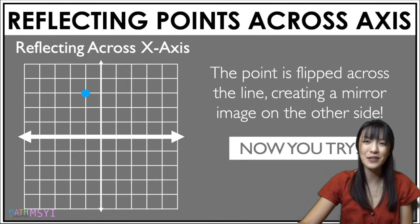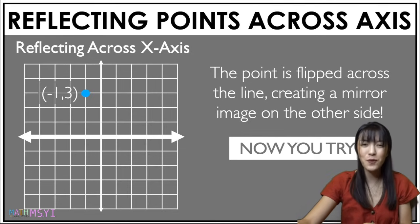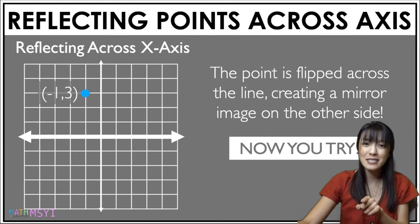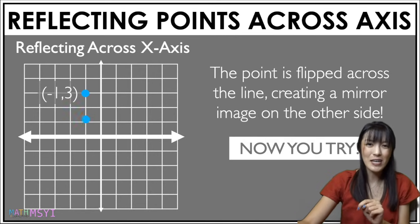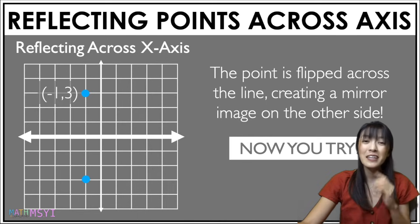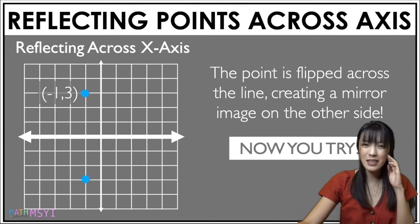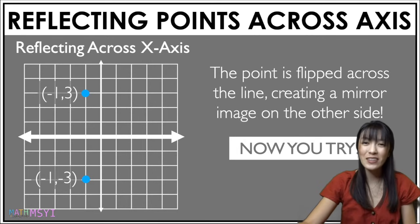Let's try another one. This point is negative 1, 3. Put your finger where you think it will be reflected. Let's watch the animation. Now think of the coordinates — the coordinates here are negative 1, negative 3.